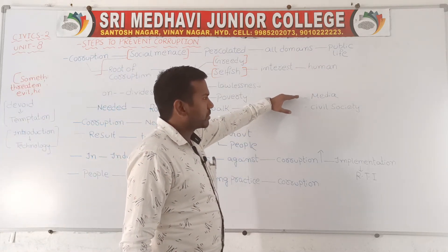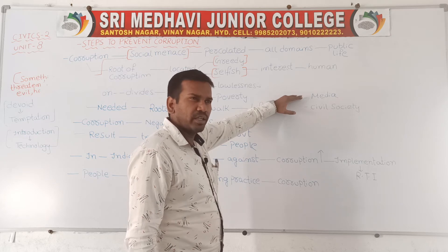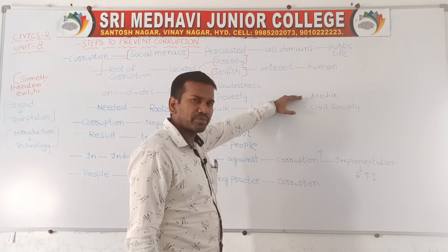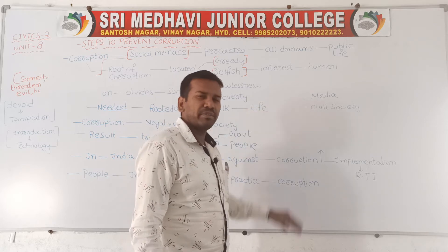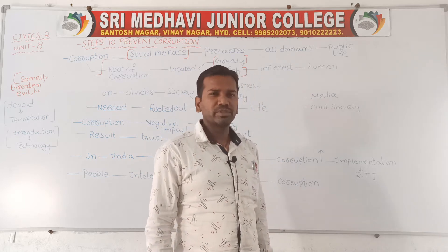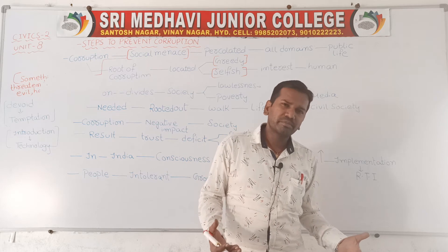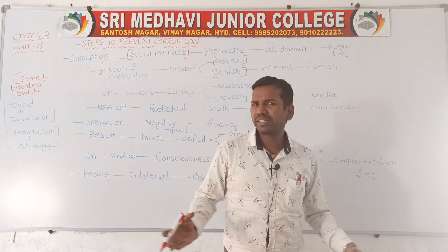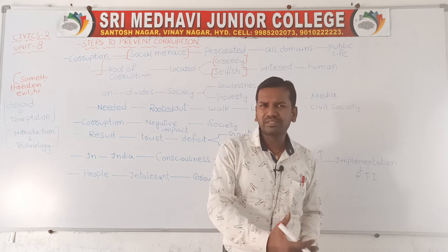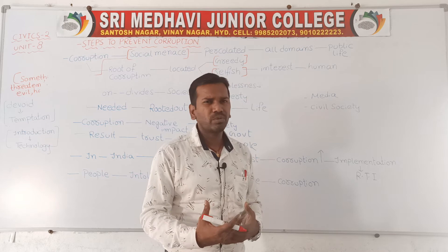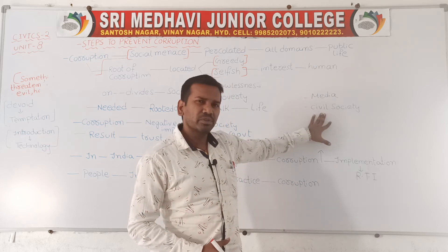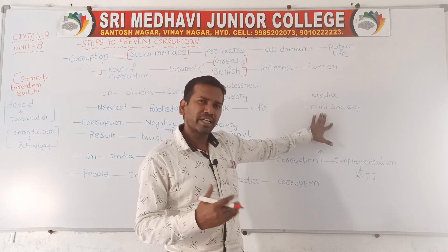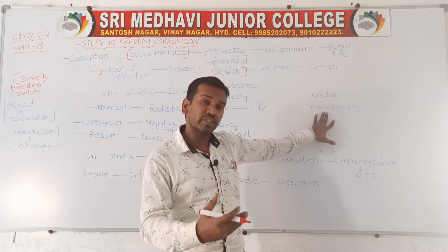The third important way to control corruption is the media challenge. Media plays a very important role — day and night the media works against corrupt practices. Wherever corruption is occurring and whatever offices are involved, they expose these offices in front of the public. The fourth is civil society. Educated societies can control corruption because people in them have the right to information and know how to utilize it, while in villages people often do not know how to use the Right to Information Act. Educated civil society uses the RTI Act to demand government transparency and accountability.